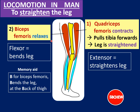As a memory aid: biceps femoris contracts and bends the knee. The letter B helps you remember — B for bends, B for backwards (the lower leg goes backwards), and B for back (biceps femoris is located at the back of the thigh, not the front). So B stands for many things: it helps the leg bend backwards and is located at the back of the thigh.